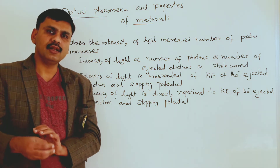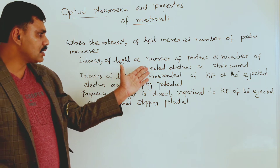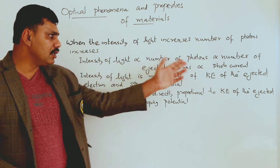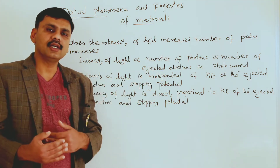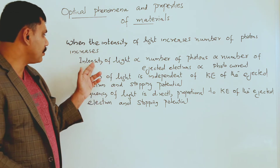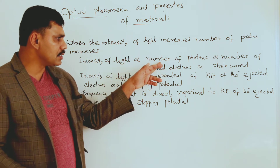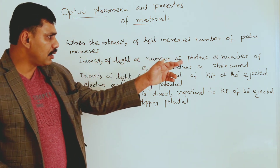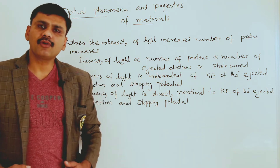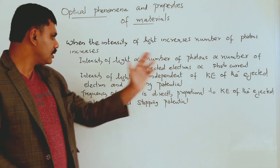One photon can eject one electron, so when the number of photons increases, more electrons are ejected. More ejected electrons means more flow of current in the circuit — more photocurrent. So when the intensity of light increases, the number of photons increases, the number of ejected electrons increases, and there will be more photocurrent.